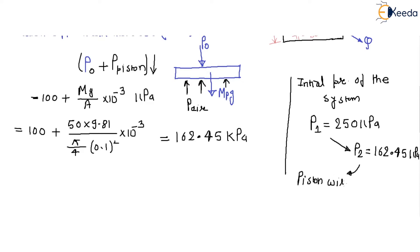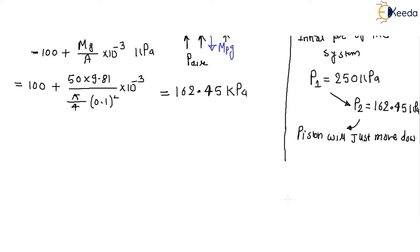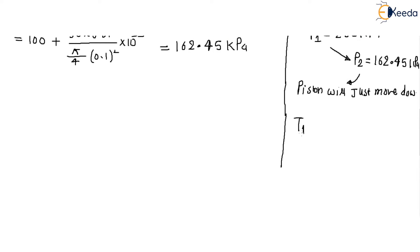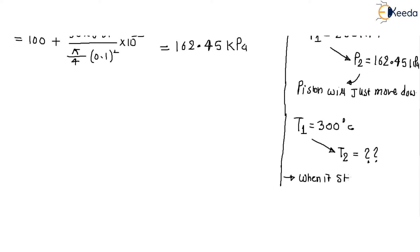The initial temperature T1 = 300 degree centigrade. We need to find the temperature at which the piston will just start to move down. When the piston is about to move, the volume of the system is fixed — there is no change in volume — so we apply the ideal gas equation.